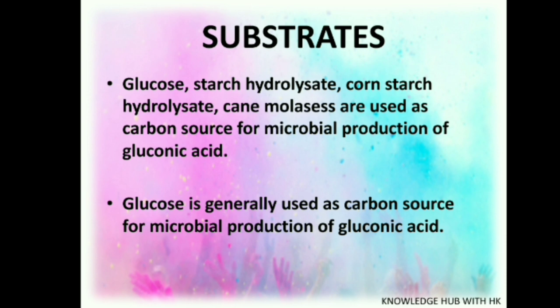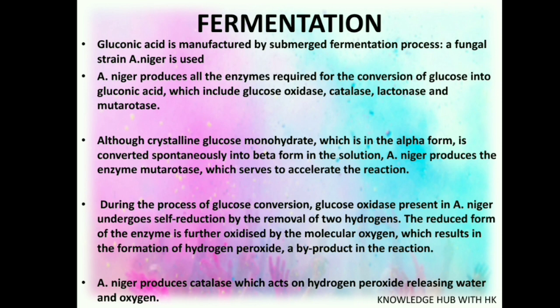Moving to fermentation: gluconic acid is manufactured by a submerged fermentation process. A fungal strain of Aspergillus niger is used because it produces all the enzymes required for the conversion of glucose into gluconic acid, such as glucose oxidase, catalase, lactonase, and mutarotase. All the crystalline glucose monohydrate, which is in the alpha form, is converted into the beta form in solution.